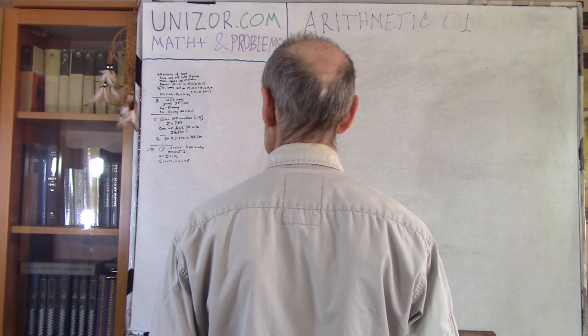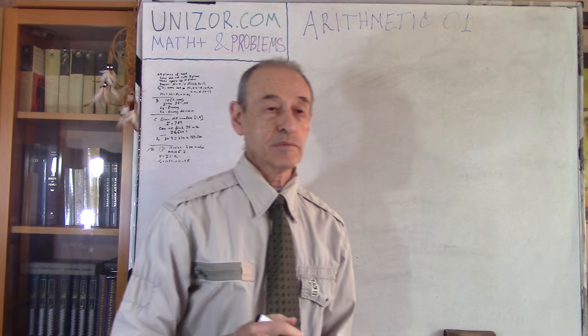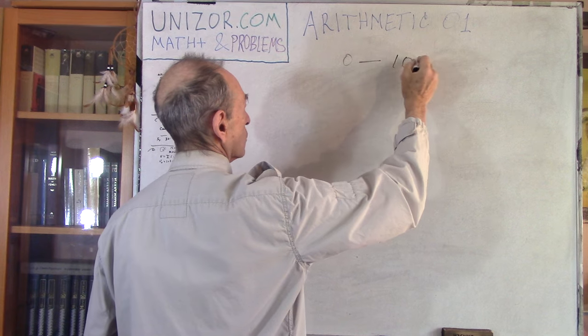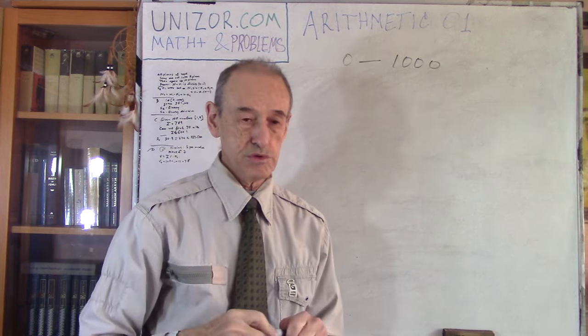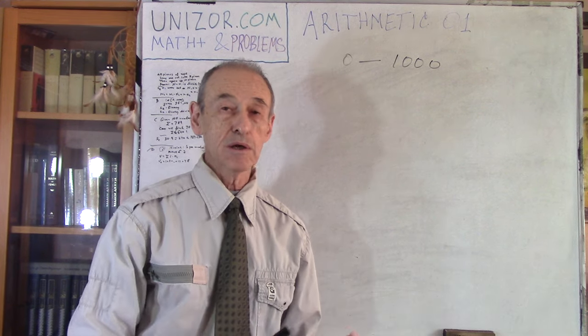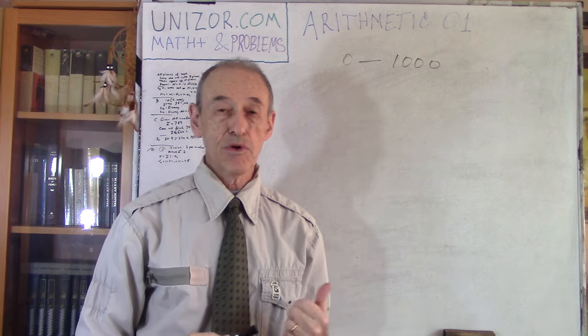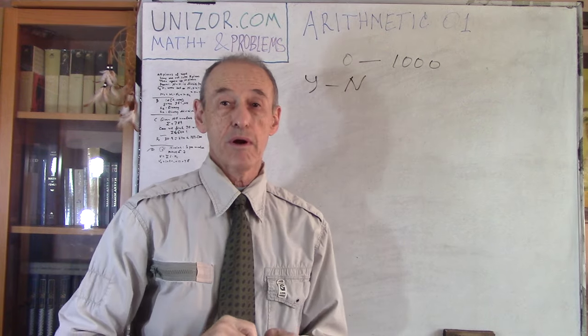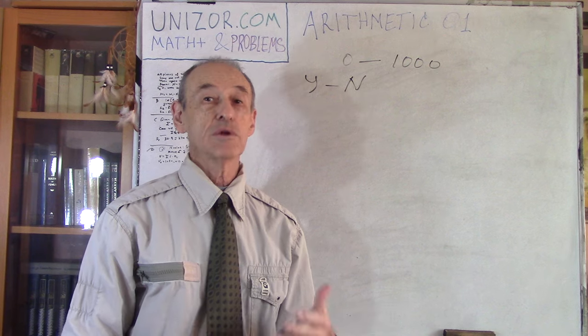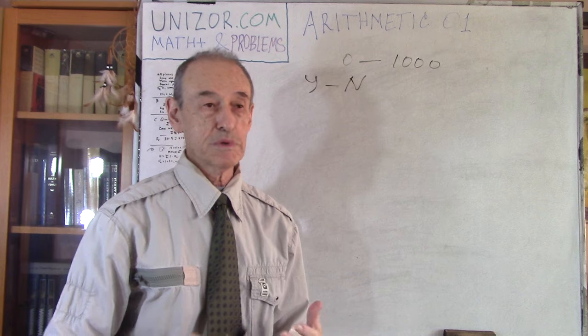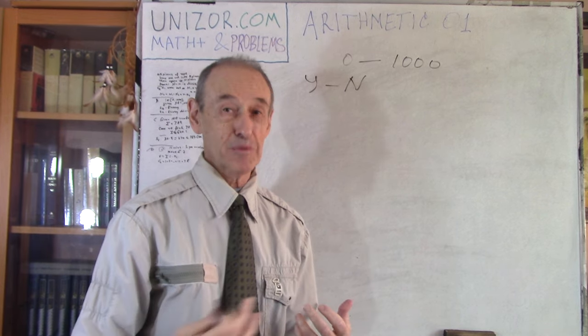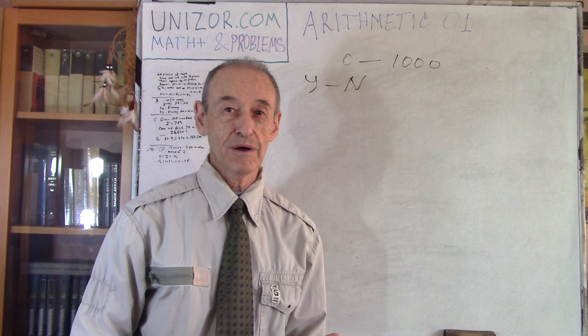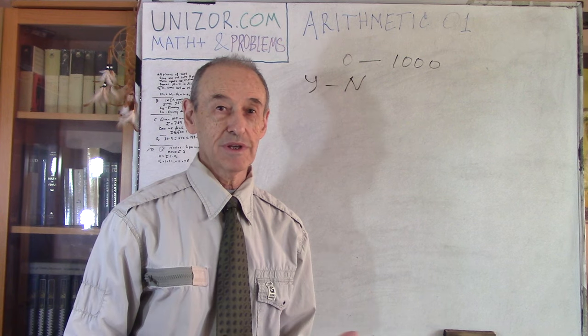Problem number two. Let's say one person decides to think about some kind of a number from zero to one thousand. Another person is supposed to find out what this number is by asking questions which can be answered by the first person only as yes or no. I cannot really ask what number do you think about, because the person cannot answer. The person can answer only yes or no, which means I have to ask many questions to find out the number.